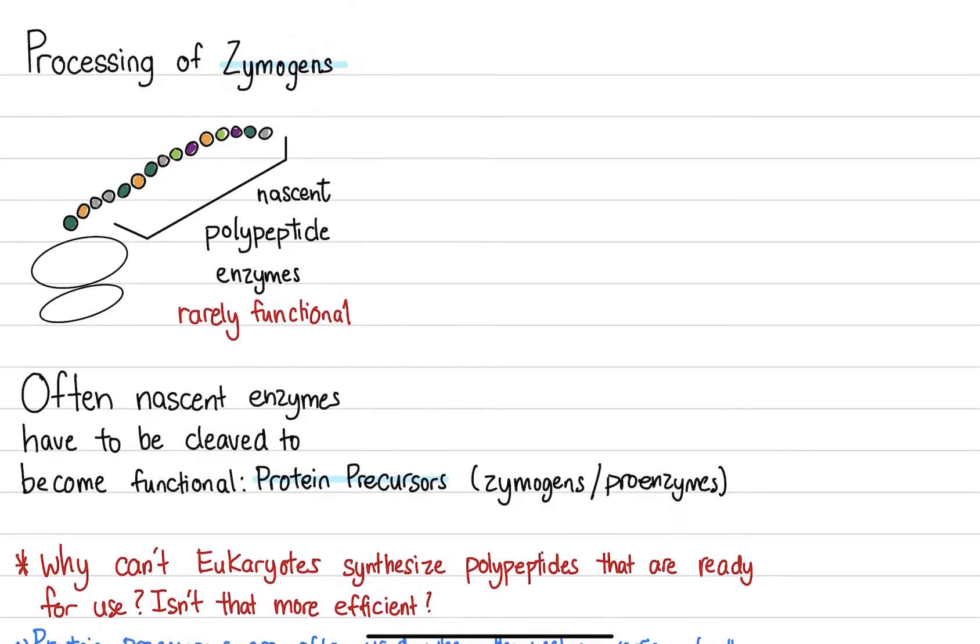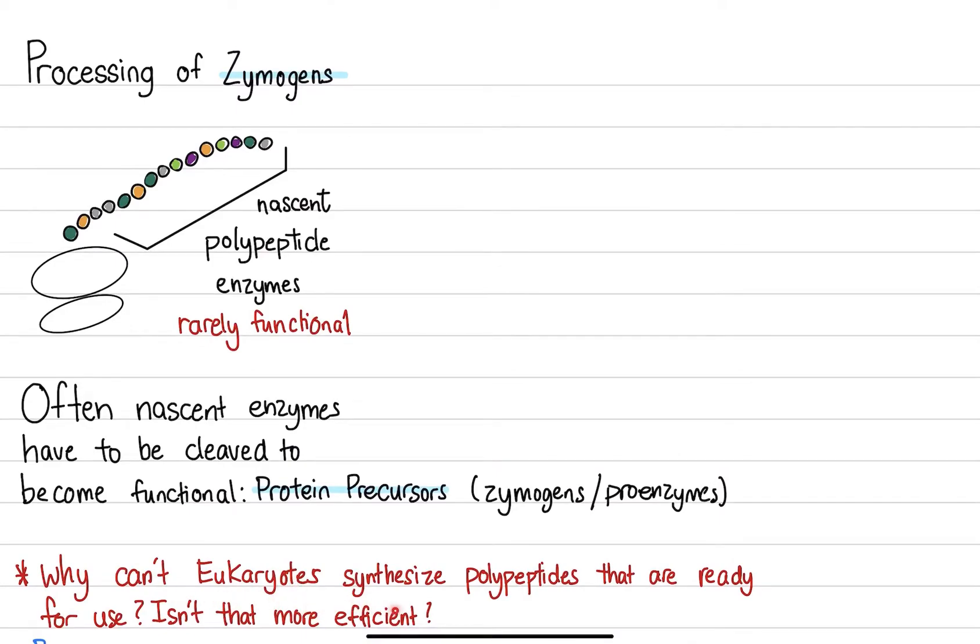So why can't eukaryotes synthesize polypeptides that are ready for use? Isn't that a more effective way? So you might be thinking that, well, prokaryotes can just simply transcribe, translate, have their protein ready on spot. How efficient is that? Why can't eukaryotes do the same thing?